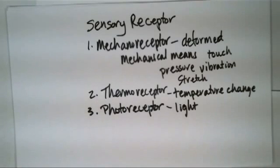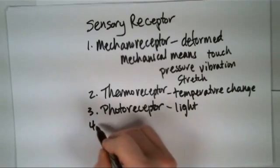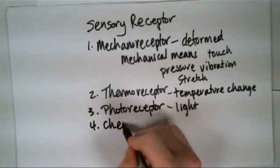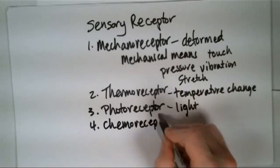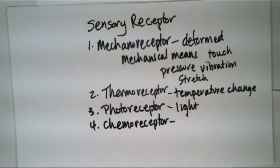They pick up the different variations in light intensity, light energy, and transmit that down that optic nerve, number two on the cranial nerves, back to the central nervous system so they can be decoded in a higher association center. The fourth type here are chemoreceptors.